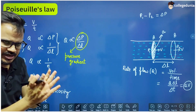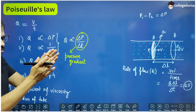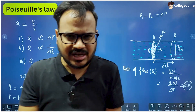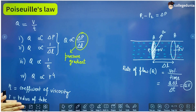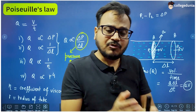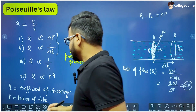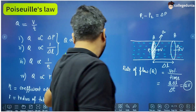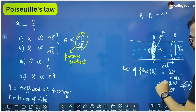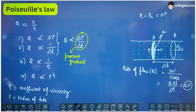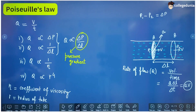Q is directly proportional to pressure gradient. Q is inversely proportional to eta — more is the viscosity of the liquid, meaning more internal friction between the layers, so it will be difficult for the liquid to flow, and the rate of flow will be less. Q is also directly proportional to the fourth power of the radius, because rate of flow is directly proportional to the square of the area of cross section, and area is proportional to the square of the radius (area = πr²), giving Q proportional to r to the power 4.